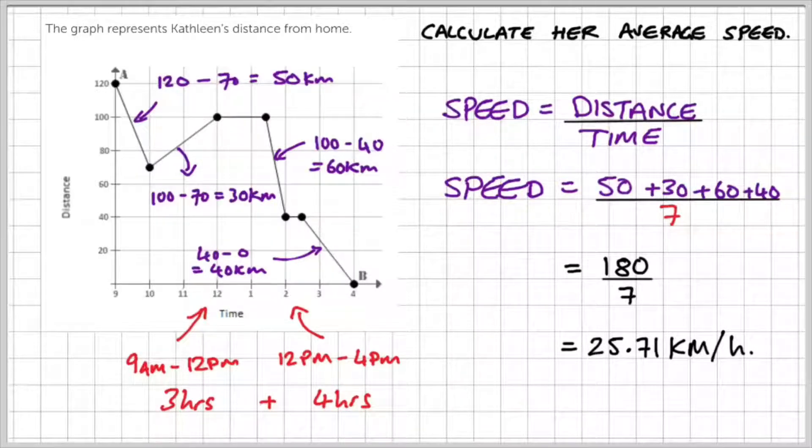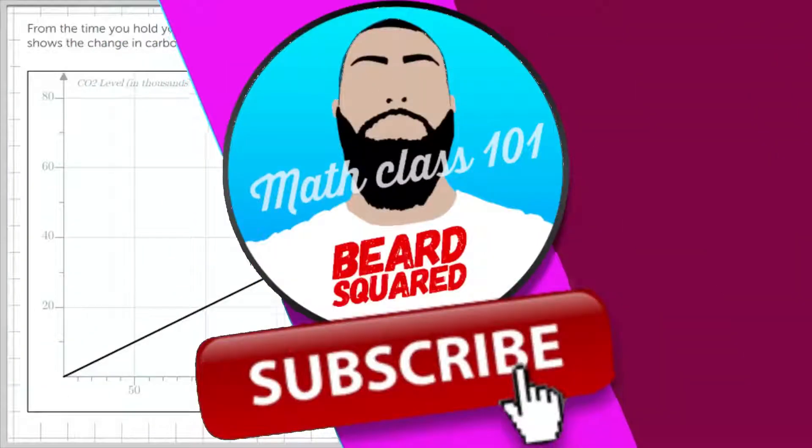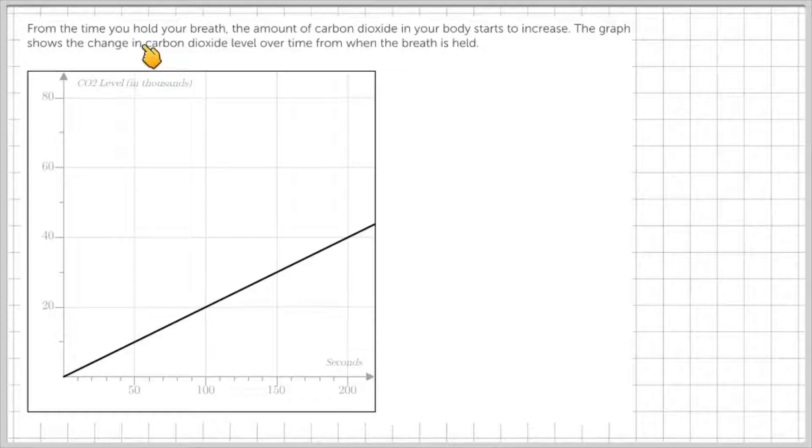OK, stick with us in the last example because we're going to be talking about the rate of change and working out the gradient of a line. OK, so in this question, it says, from the time you hold your breath, the amount of carbon dioxide in your body starts to increase. The graph shows the change in carbon dioxide levels over time from when the breath is held.